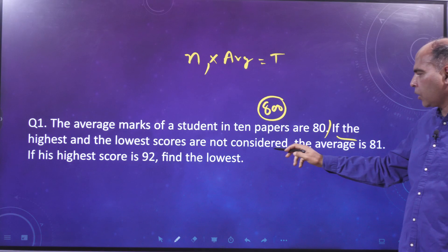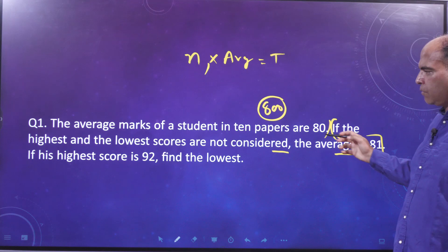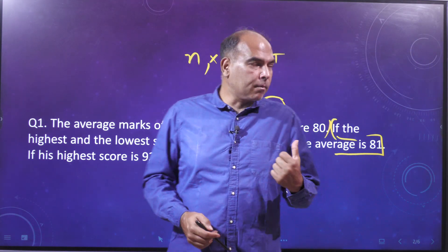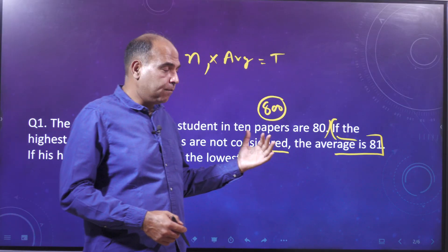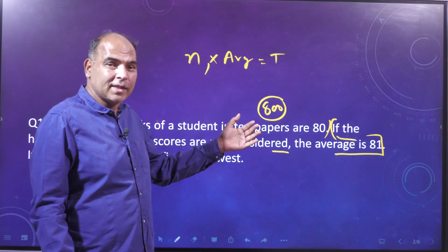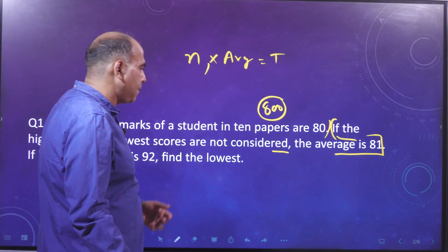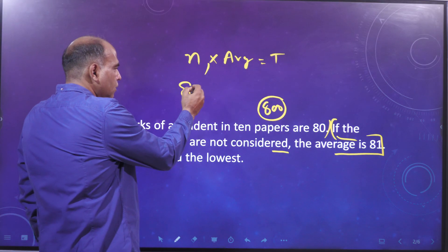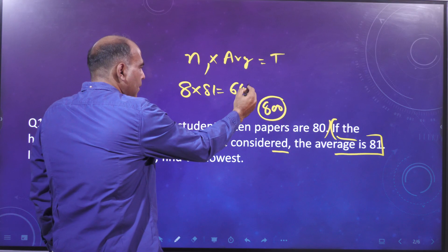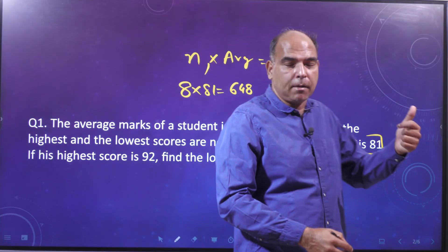Then it says if the highest and lowest scores are not considered, the average is 81. When we remove the highest and lowest marks, we are talking about eight papers. In those eight papers the average is 81, so 8 into 81 means he scored 648 marks in those eight papers.